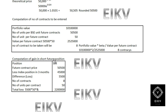Now the computation of gain in terms of the short futures position: the position would be short. The futures contract price is 50,500, and the index position in three months is 45,000. When we deduct 45,000 from 50,500, we get a gain of rupees 5,500. Number of contracts is 8, and number of units per contract is 50. Therefore the total gain is 5,500 × 50 × 8 = 22 lakh.